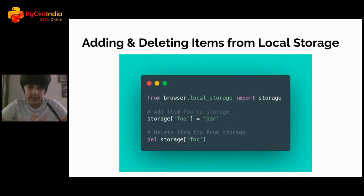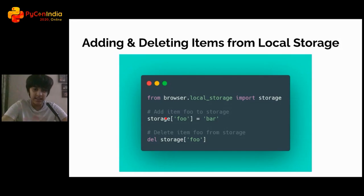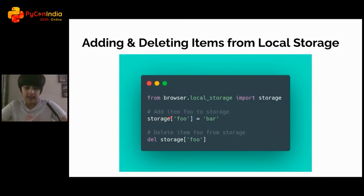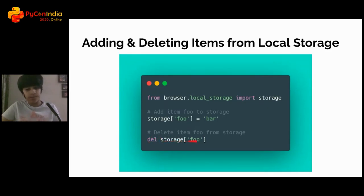To work with local storage in Brython: from browser.local_storage import storage. Then you can write storage['foo'] = 'bar' — just like a Python dictionary. Storage is your local storage, and it behaves like a dictionary: it checks if the key 'foo' exists; if not, it creates it with value 'bar'. To delete, simply use the del keyword: del storage['foo'].